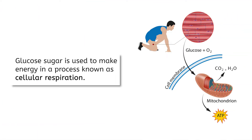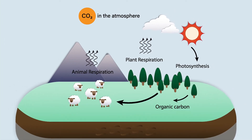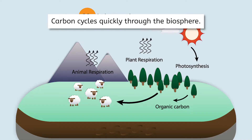So how do living things turn carbon-containing glucose into usable energy? Glucose sugar is used to make energy in a process known as cellular respiration. Both plants and animals go through this process. As glucose is broken down, carbon dioxide is released as a leftover waste product. When you and I breathe out, we're exhaling the carbon dioxide that was leftover from our cells performing cellular respiration. Through photosynthesis, food webs, and cellular respiration, carbon cycles quickly between the atmosphere and biosphere reservoirs. Living organisms constantly need more energy to survive, so it's important that these steps in the carbon cycle happen quickly.